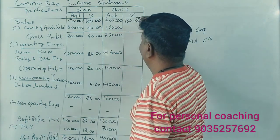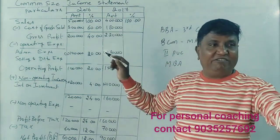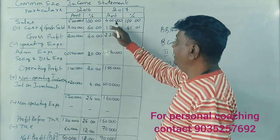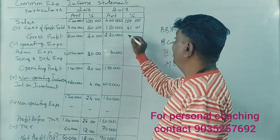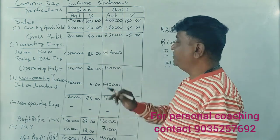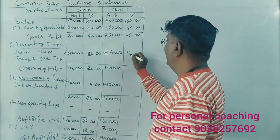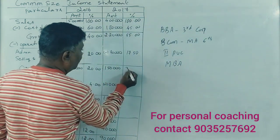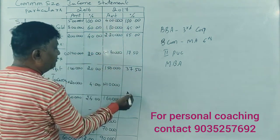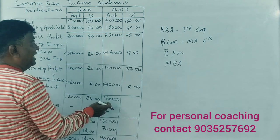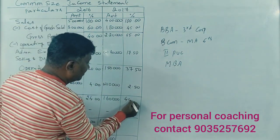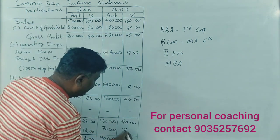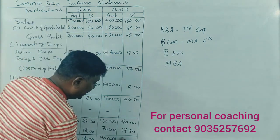For 2017, the sales figure is 4 lakhs. 1 lakh 80 thousand divided by 4 lakhs into 100% is 45%. 1 lakh 20 divided by 4 lakhs is 55%. 70,000 divided by 4 lakhs into 100% is 17.5%. 1 lakh 50 divided by 4 lakhs into 100% is 37.5%. 10,000 divided by 4 lakhs is 2.5%. 1 lakh 60 divided by 4 lakhs is 40%. 70,000 is 17.5% and 90,000 is 22.5%.